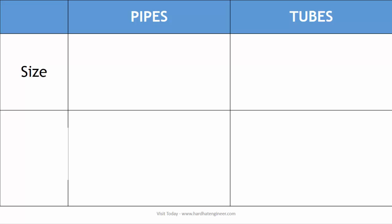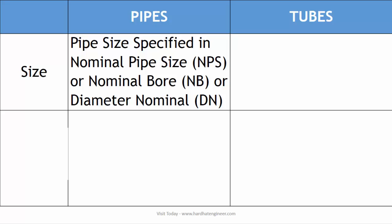Let's check the differences. The first difference is how the size is defined for pipe and tube. American codes and standards related to oil and gas, such as